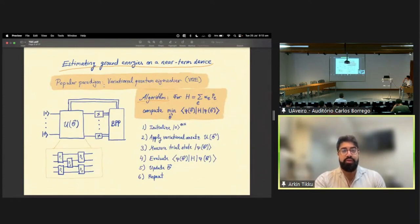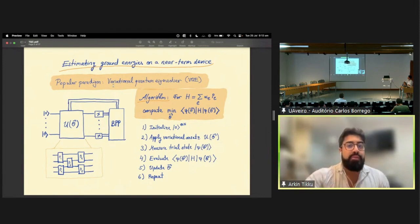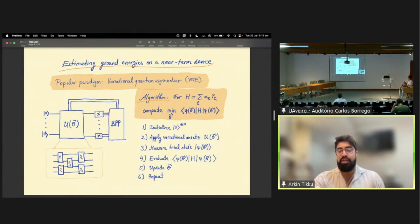The most common way of doing this with a near-term device is using the so-called variational quantum eigensolver. The variational quantum eigensolver is a hybrid quantum classical algorithm. Say somebody hands you a local Hamiltonian that is written in the Pauli basis. Then your goal is to approximate or compute the lowest eigenvalue of this Hamiltonian using some variational ansatz state. The algorithm proceeds by starting in some product state, and then you apply this variational circuit ansatz, which is some predefined circuit with continuous parameters onto the state.